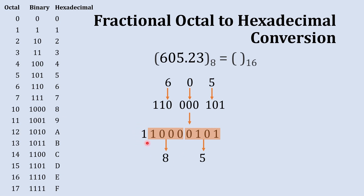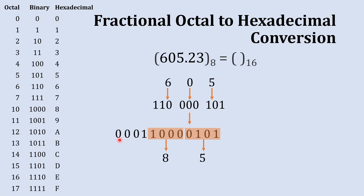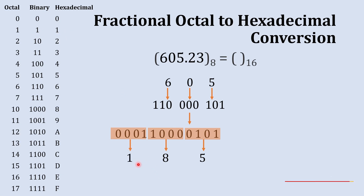We have only one digit remaining. Since we need a set of four digits to convert binary to hexadecimal, we add three zeros on the left-hand side — adding zeros to the left does not change the magnitude. So 0001 in binary is 1 in hexadecimal. Therefore, 185 is the hexadecimal equivalent of octal 605.